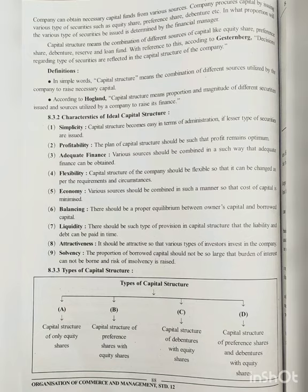Next, we will see the characteristics of the ideal capital structure. The first characteristic is simplicity — the capital structure becomes easy to administer if fewer types of securities are issued. If we use fewer security types, we can manage our administration process more easily.